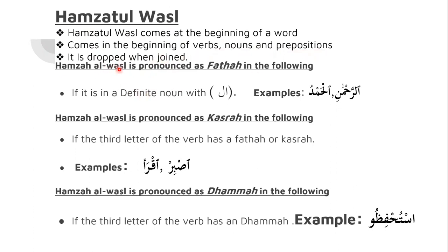Hamzatul Wasal is dropped when joined. It is pronounced as a Fathah in the following cases. If it comes as part of a definite article, which means it comes in the form of Al, we have two cases that we apply: we either pronounce it as Laam Shamsiya, or we pronounce it as Laam Qumariya.